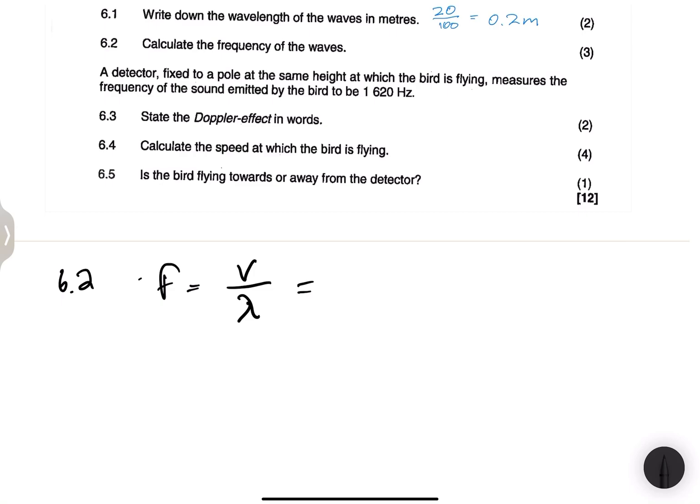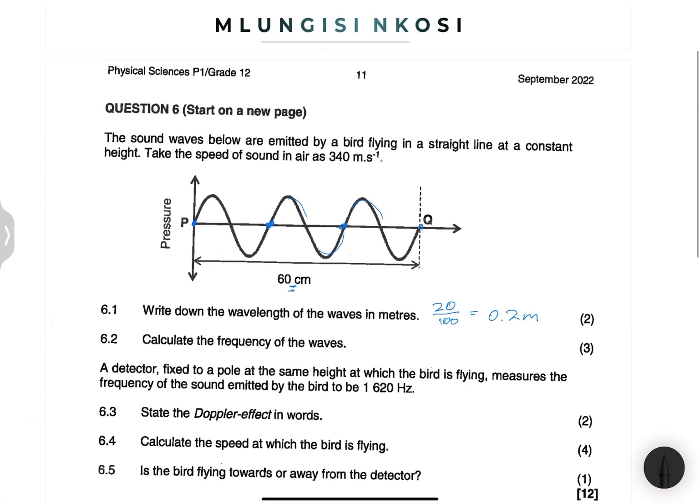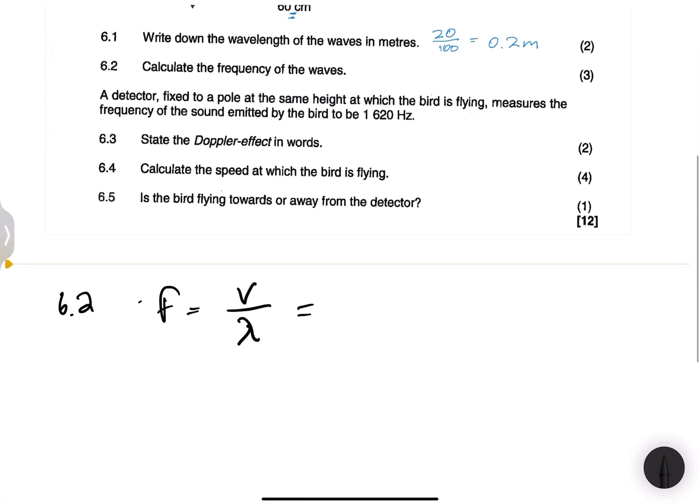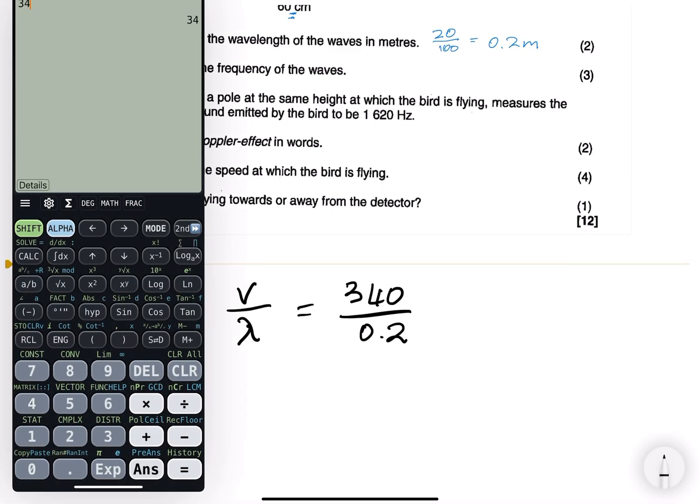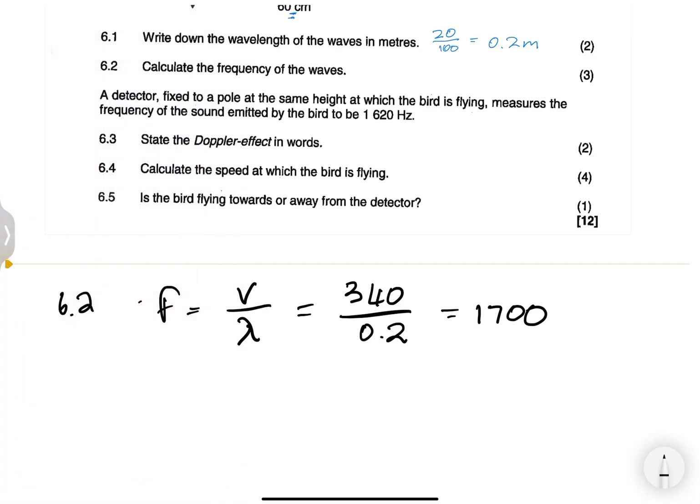So we're given the speed. In this case, please remember that the speed is not the speed of the object that's moving, but it is rather the speed of sound. And remember, we're given that speed of sound as 340 meters per second. And our wavelength in this case we said is 0.2. So that's 340 divided by 0.2, and that gives us 1,700. So that's 1,700 hertz in this case.